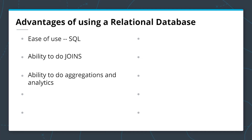The ability to do aggregations and analytics — this is really what a relational database was built for, along with being a persistent data store. Group by, order by, and sum are all examples — we're not going to go into these in this course, but they're good examples of aggregations.